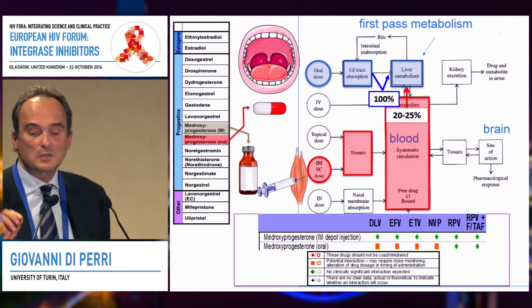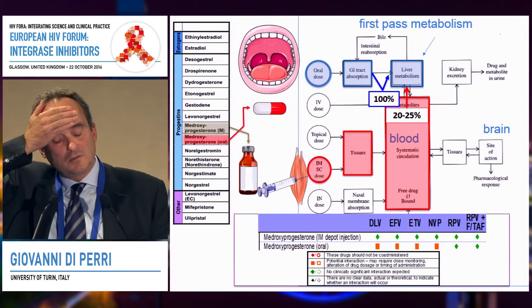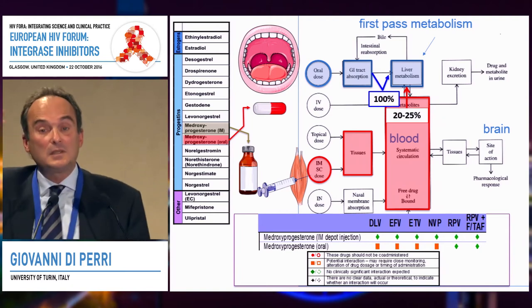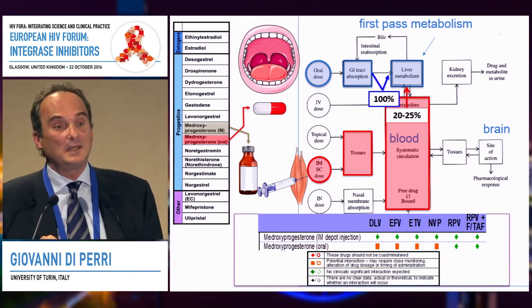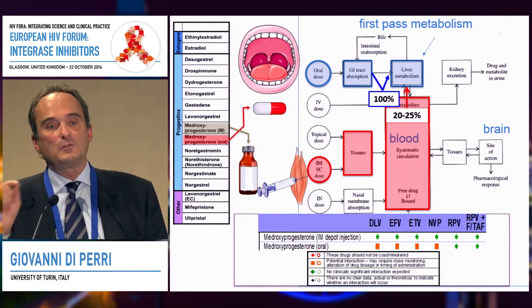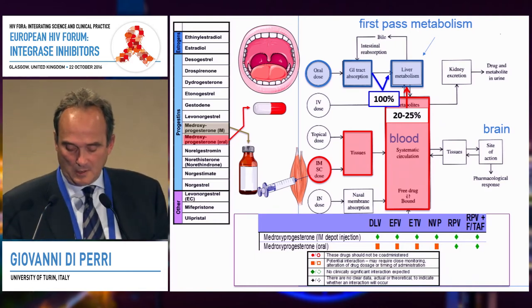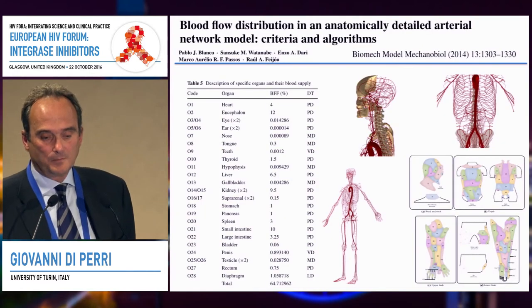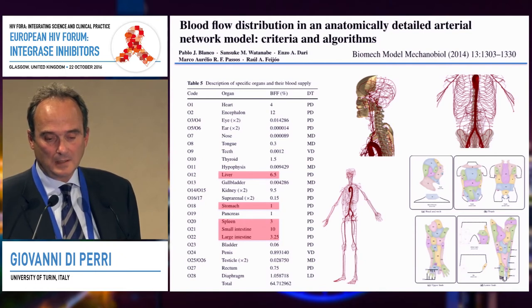If you look at the Liverpool recommendation website, the recommendations actually differ for the two pharmaceutical forms — exactly the same drug, but in the presence of inducers like delavirdine, efavirenz, and nevirapine, you see a different recommendation. Interestingly, there is a study in women taking medroxyprogesterone acetate intramuscularly, but there is not a study for those taking the same drug orally. This picture shows the distribution of blood flow at rest according to the arterial blood flow.